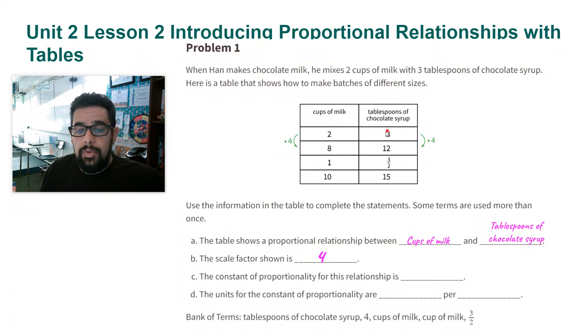You can also get that by doing three divided by two in this top row, 12 divided by eight in this row, 15 divided by 10. All of those are going to give you three over two.